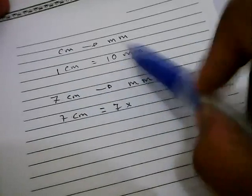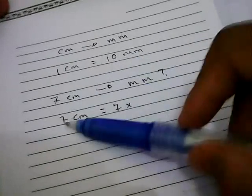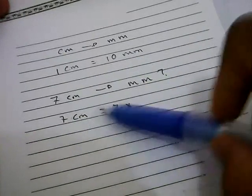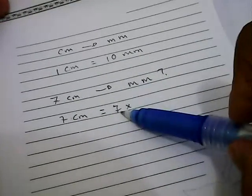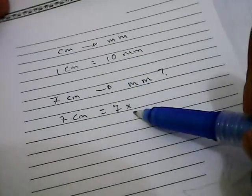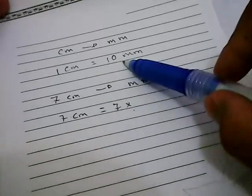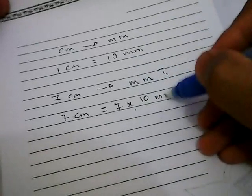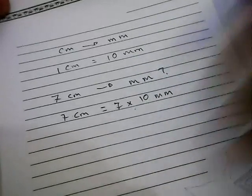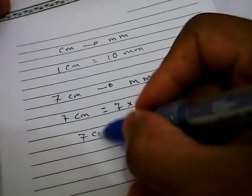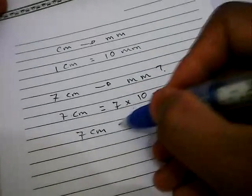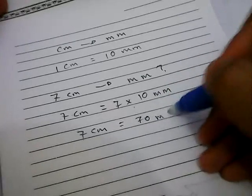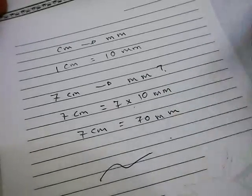Now in this case, 7 centimeters is equal to 7, and you need to multiply with 10 millimeters. Well let's write down 10 millimeters, and then 7 centimeters is equal to 70 millimeters. Well that's it, that's the result of our problem.